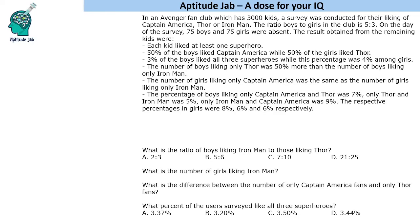Hello everyone, welcome to Aptitude Jab. This is a set based on Venn diagrams. There is an Avenger fan club with 3000 kids, and a survey was conducted for the liking of three superheroes: Captain America, Thor, and Iron Man. The ratio of boys to girls is 5:3, and on the day of the survey, 75 boys and 75 girls were absent. So all this data is about the remaining kids.